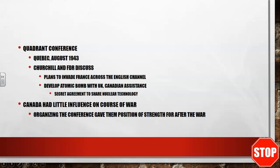Then we're going to get the Quadrant Conference in Quebec in August of 1943. Churchill and FDR are going to meet and discuss a couple of different plans. The first is plans to invade France across the English Channel — this is ultimately going to be the initial steps of the D-Day invasion plan. Also, they're going to talk about developing the atomic bomb with United Kingdom and Canadian assistance. The Canadians and the British were also involved in the Manhattan Project, and that's going to be happening right through here.